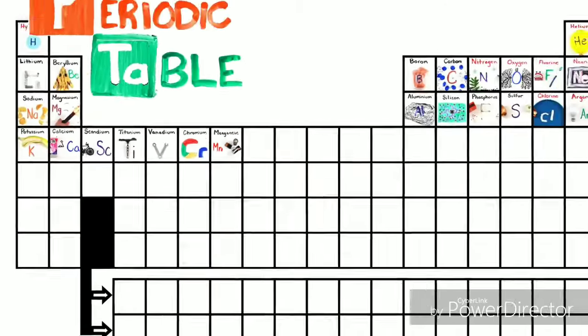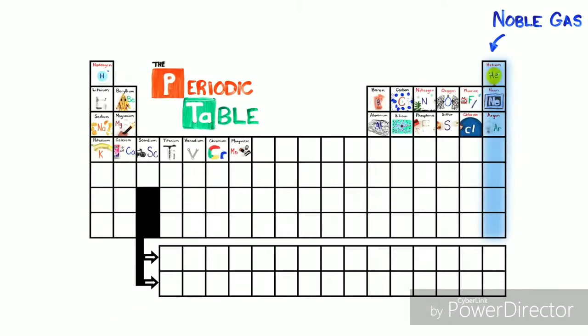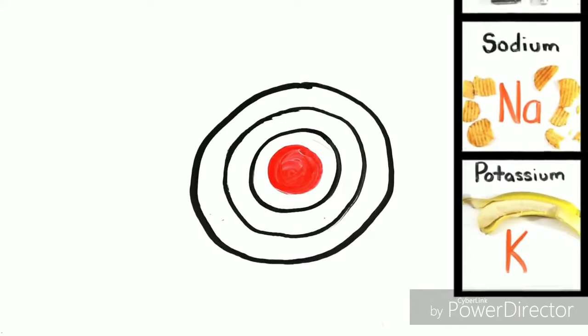This is the Periodic Table. Noble gas is stable. Halogens and alkali react aggressively. Each period will see new outer shells while electrons are added moving to the right.